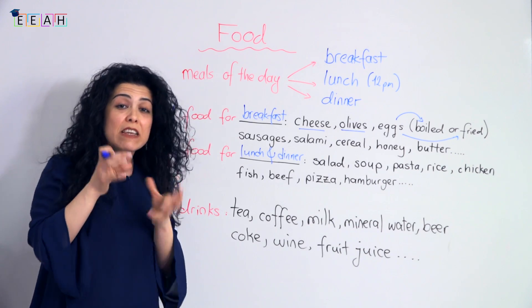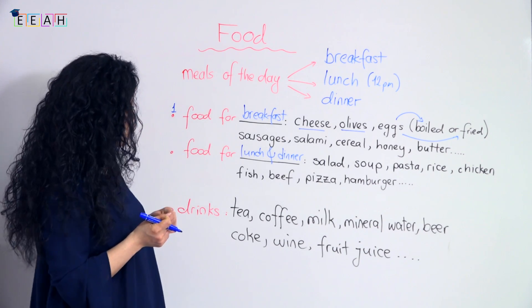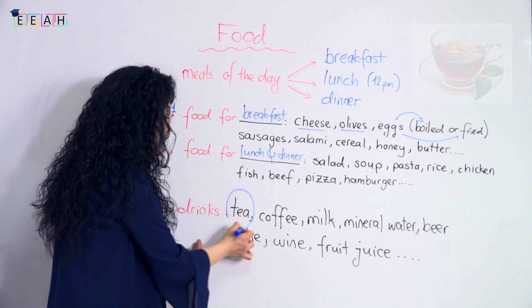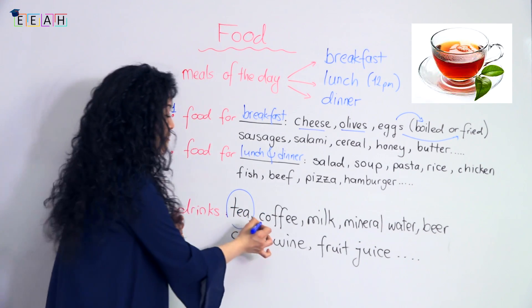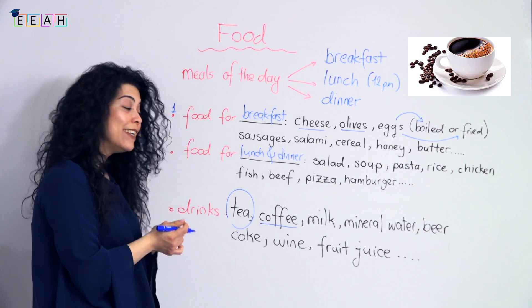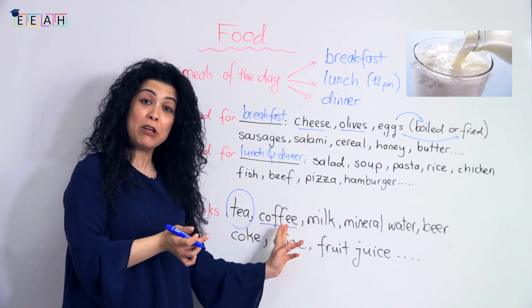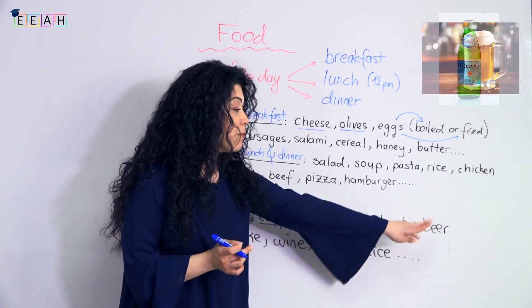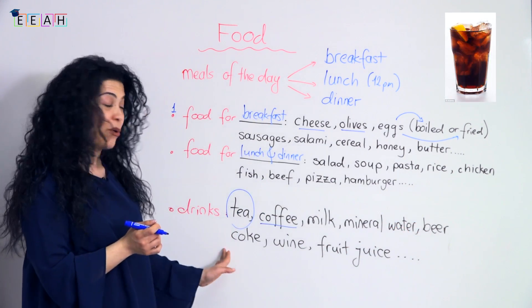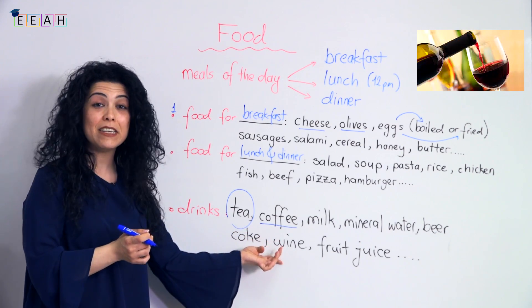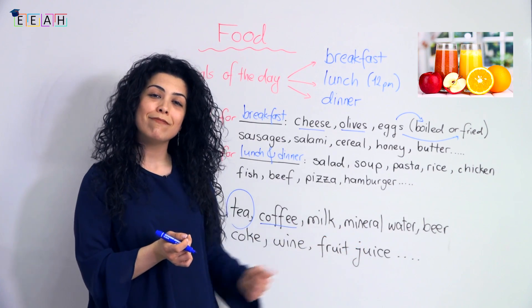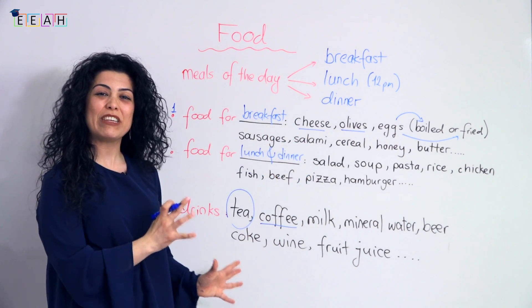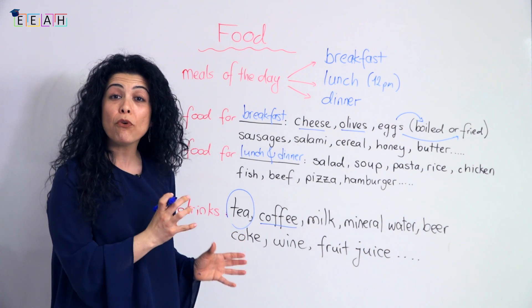Let's talk about drinks — things we drink at meals. For breakfast we usually have tea, or you can have coffee. You can have coffee with milk, why not? You can also have mineral water, beer, Coke, wine, fruit juice, and many other things. So basically, these are the common words for food and drinks.